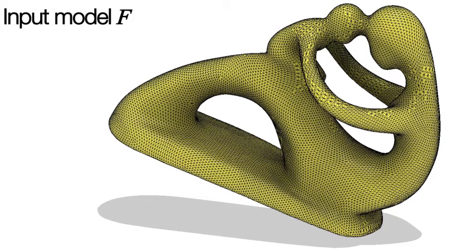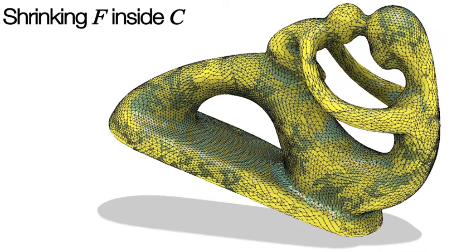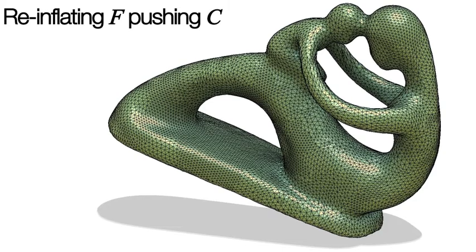Our method works on consecutive pairs in the hierarchy, beginning with the input model treated as the current fine mesh, and the next finest input decimation treated as the current coarse mesh. We flow the fine mesh inside the coarse mesh and then reinflate the fine mesh to its original positions, pushing the coarse mesh out of the way.